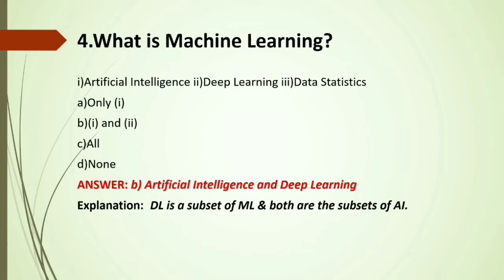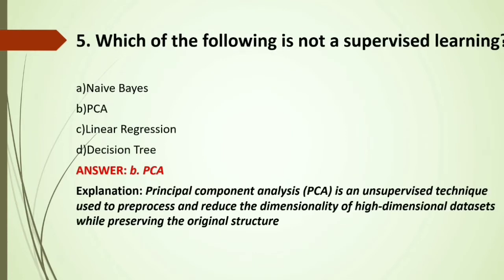MCQ: Which of the following is NOT for supervised learning? Options: A) Naive Bayes; B) PCA (Principal Component Analysis); C) Linear Regression; D) Decision Tree. Naive Bayes, linear regression, and decision tree are all supervised learning methods. However, Principal Component Analysis (PCA) is an unsupervised technique used to pre-process and reduce the dimensionality of high-dimensional datasets while preserving the original structure. Answer: PCA.